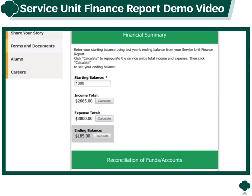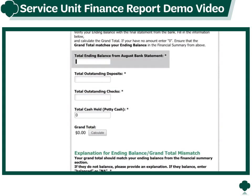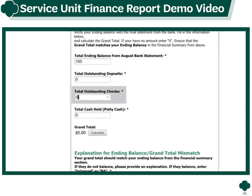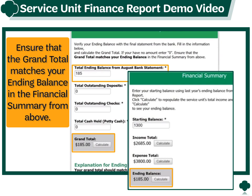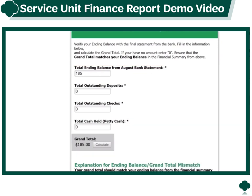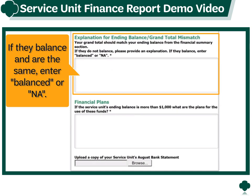Under Reconciliation of Funds and Accounts, verify your ending balance with the statement from the bank. Fill in the total ending balance from your August bank statement, total outstanding deposits, total outstanding checks, and total petty cash on hand. Then calculate the grand total. Ensure that the grand total matches your ending balance in the financial summary. If they do not balance, you can provide an explanation here. If they balance and are the same, enter balanced or NA.